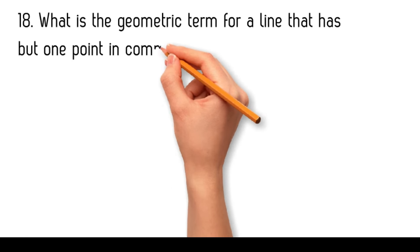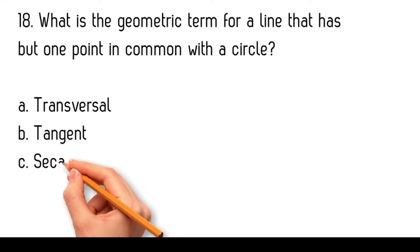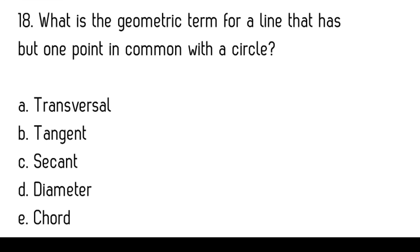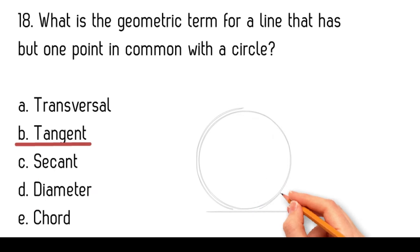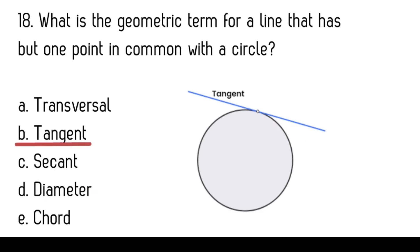What is the geometric term for a line that has but one point in common with a circle? Transversal, tangent, secant, diameter, chord. The geometric term for a line that has but one point in common with a circle is a tangent.